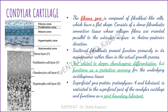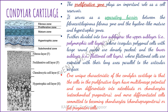The second layer from the top is the proliferative zone, which acts as a separating barrier between the upper fibrous zone and the underlying hyaline-like mature hypertrophic zones. It is divided into two sub-layers: an upper sub-layer with polymorphic cell types and a lower sub-layer with flattened cell types. A very unique characteristic of the condylar cartilage is the presence of multi-lineage potential cells in this zone, which can differentiate into osteochondral progenitors, chondro-progenitors, or even fat progenitor cells.